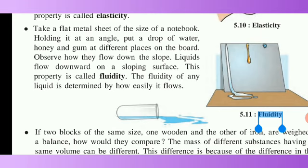You need to take three substances: water, honey, and glue, along with a metal sheet. Water flows quickly, honey flows slowly, and glue does not flow at all. From this experiment we understand that fluidity describes how quickly a liquid substance can flow.